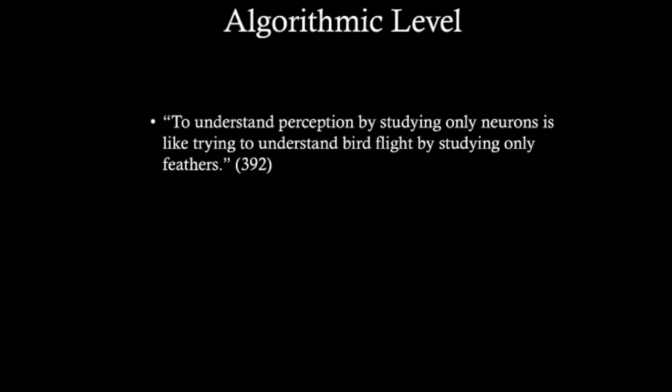Marr says that to understand perception by studying only neurons is like trying to understand bird flight by studying only feathers. It cannot be done. You have to understand the problem of flight, aerodynamics, to see what role feathers are playing. The same goes for studying computation in the brain. Before studying vision by analyzing neurons, let's see what computational job those neurons are trying to complete.